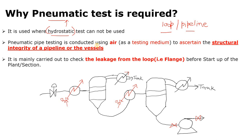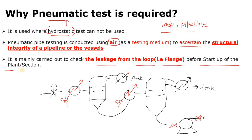Pneumatic pipe testing is conducted using air as the testing medium to ascertain the structural integrity of the pipeline or vessel — meaning whether your vessel or pipeline or loop is okay or not, i.e., whether there is any leakage or not. It is mainly carried out to check leakage from the loop, and mainly at the flanges, before startup of the plant or section.